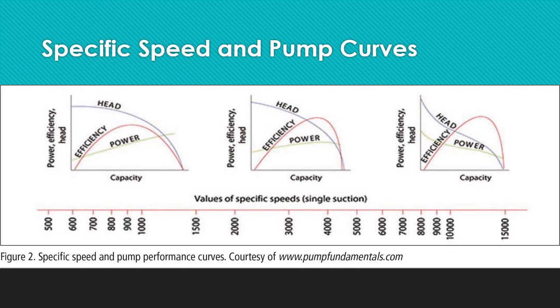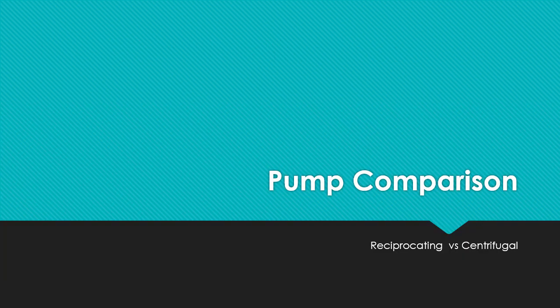This slide helps you identify the pump characteristic curves for different specific speeds. In the slide, these are radial flow pumps, these are mixed flow pumps, and these are axial flow pumps.